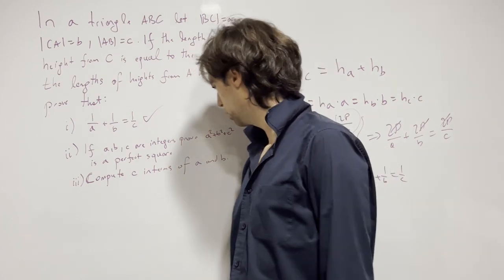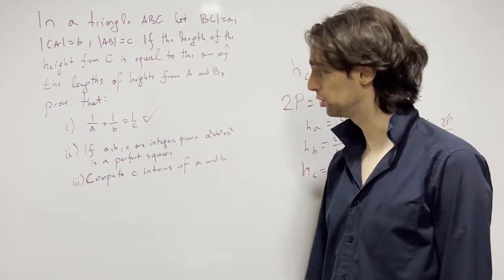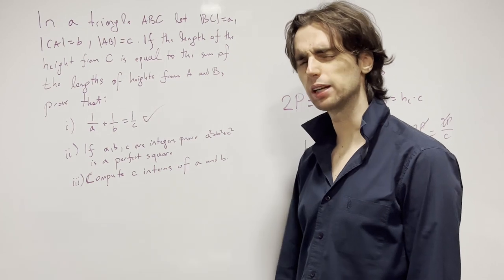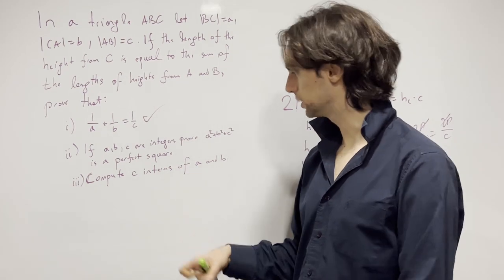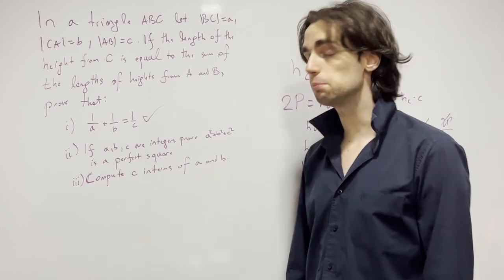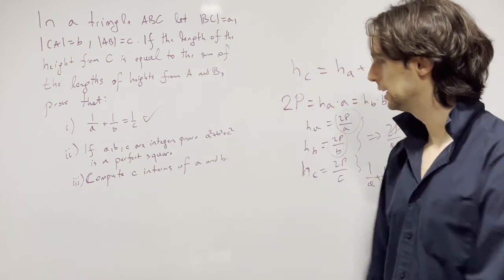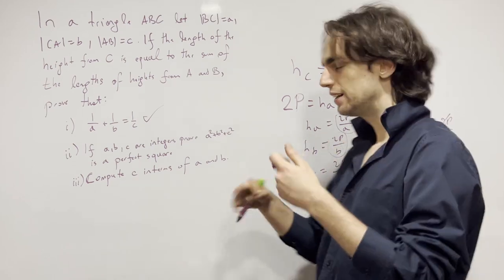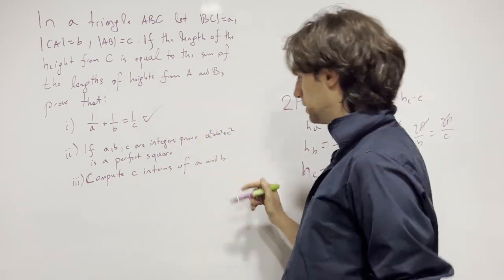ABC are integers. Okay they're integers and we have this holds true for them. What does this mean for us? And then we need to show that A squared plus B squared plus C squared is a perfect square. Well let's see.